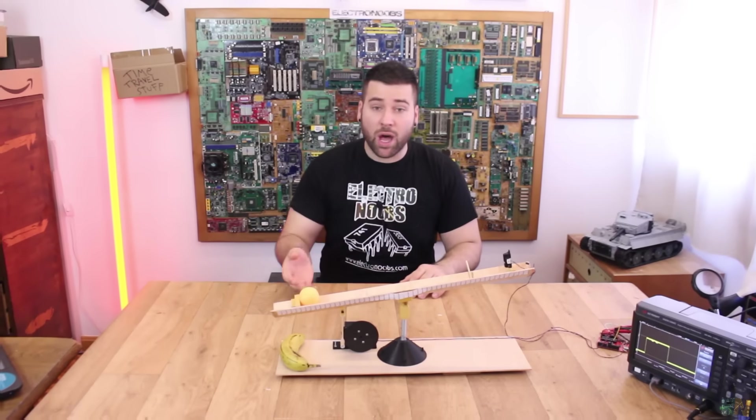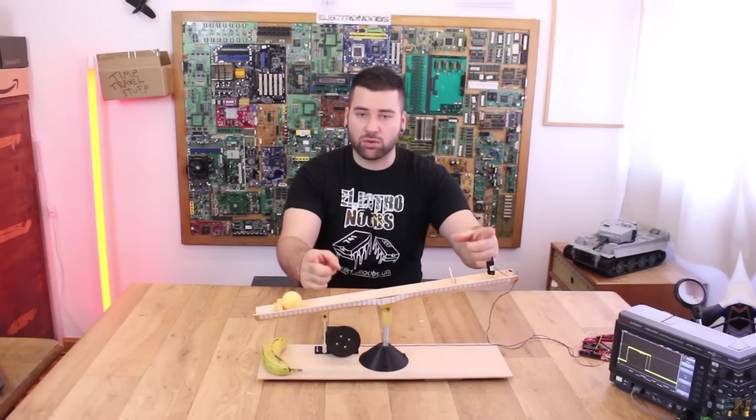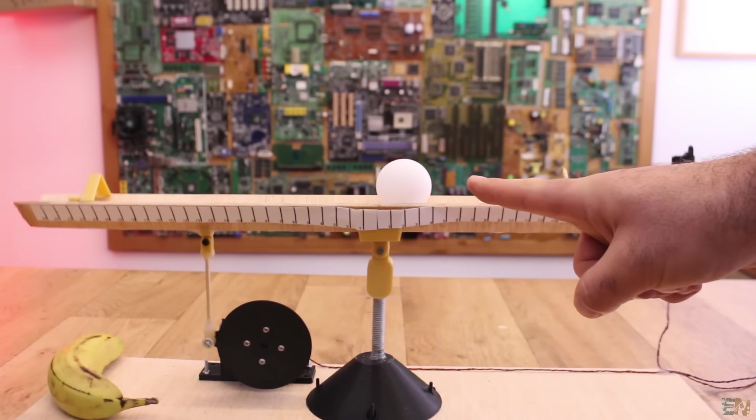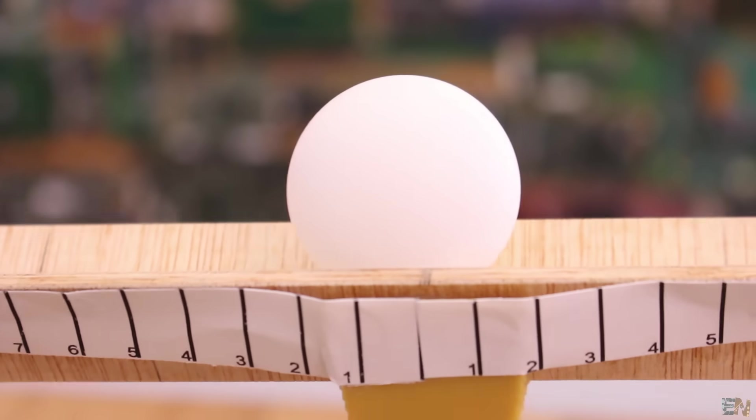But if PID still seems very difficult for you, here I have the most basic and simple example that will show you how the P, the I and the D variables will affect the system. So this example will be better because it is a little bit more graphic. You can see the variables in any given moment, you can see the distance to the ball, how the motor is moving and so on. And also the speed of reaction is a little bit slower than in the case of the brushless motors. So we can see all the details.